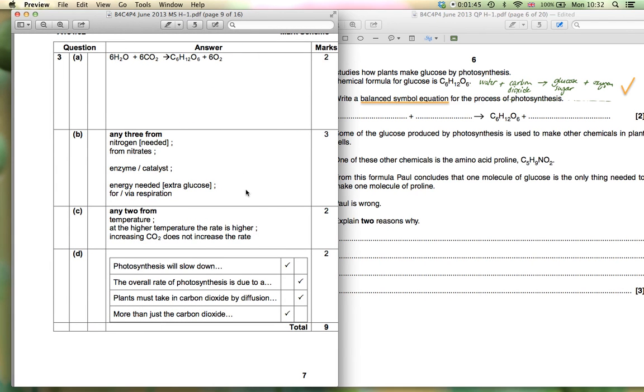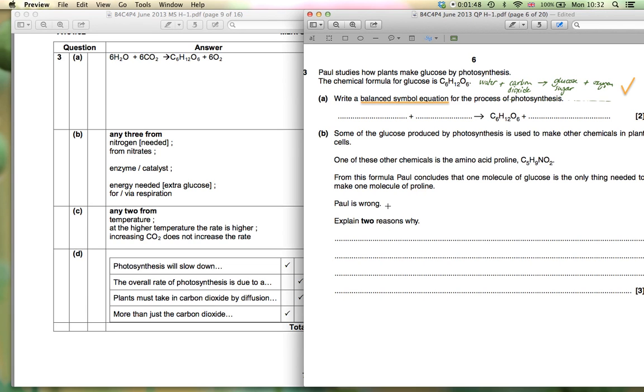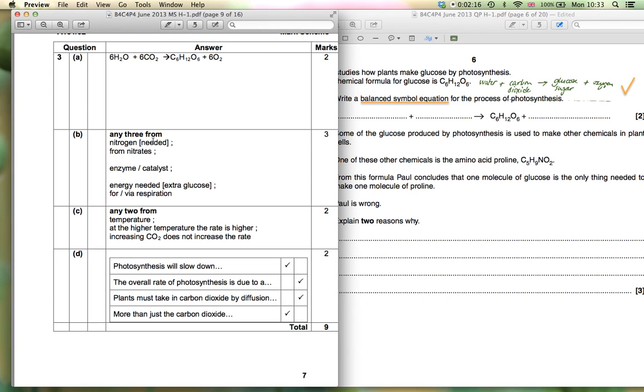The second part of the question is about what happens to the sugar. Some sugar is used for respiration in the plant, some is used to build molecules like cellulose and starch, but some is also used to make amino acids. Here's proline C₅H₉NO₂ and Paul who's doing this experiment has concluded that one molecule of glucose is the only thing needed to make proline. He's wrong. Simply if you explain that nitrogen was needed because the formula contains nitrogen which can't have come from anywhere in your first equation then you get a mark. If you've also said where it comes from - nitrates that the plant has absorbed from its roots - you get another mark.